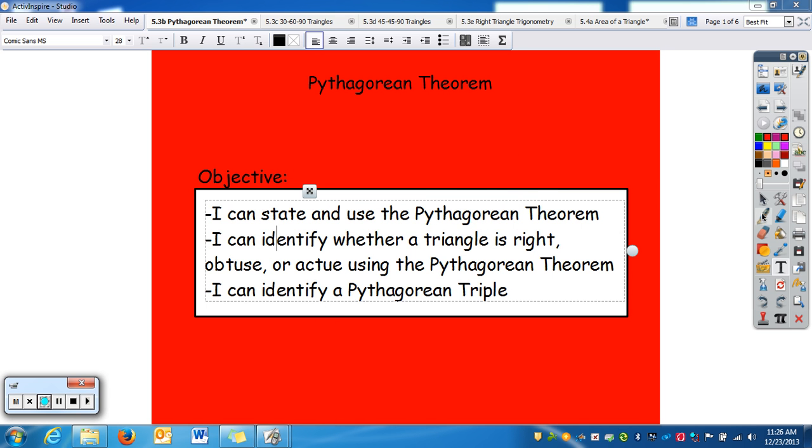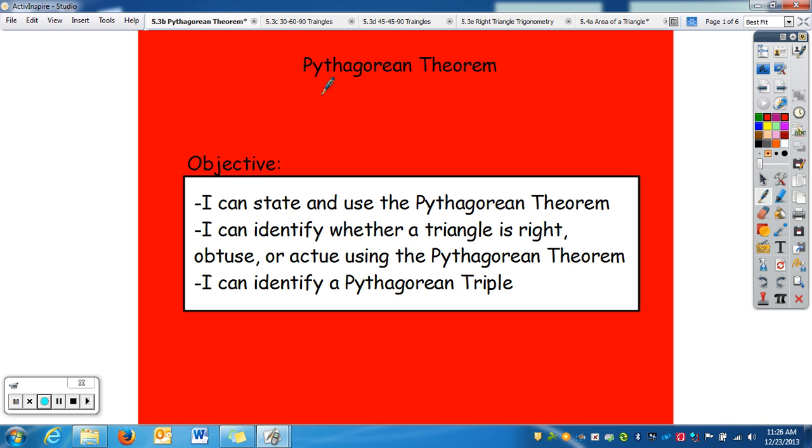In this video, we're going to talk about the Pythagorean Theorem. The Pythagorean Theorem, a squared plus b squared equals c squared, is probably one of the most famous mathematical theorems out there, and you're probably familiar with it.